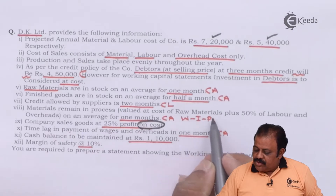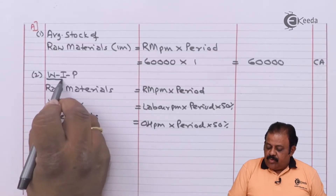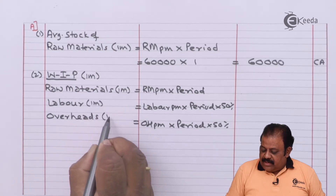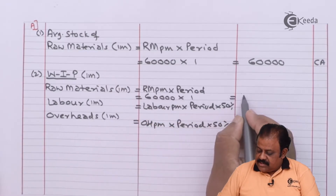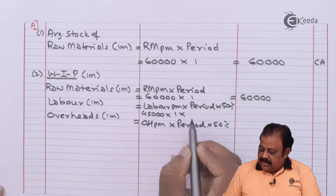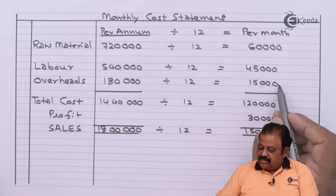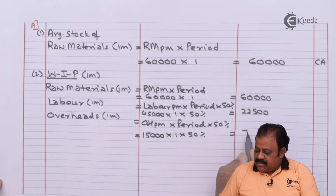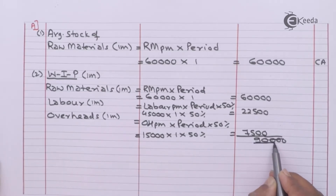Materials remain in process valued at cost of raw material plus fifty percent of labor and overheads on an average for one month — this is the WIP stock. Raw materials: sixty thousand multiplied by one month equals sixty thousand. Labor: forty-five thousand per month multiplied by one month multiplied by fifty percent equals twenty-two thousand five hundred. Overheads: fifteen thousand per month multiplied by one month multiplied by fifty percent equals seven thousand five hundred. So stock of work in progress is ninety thousand — this is a current asset.